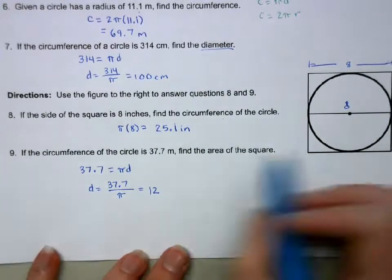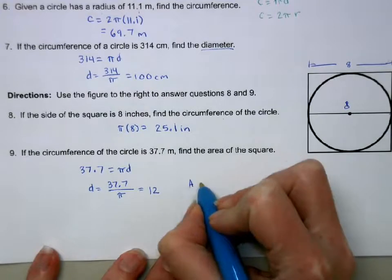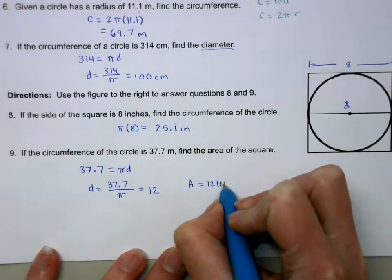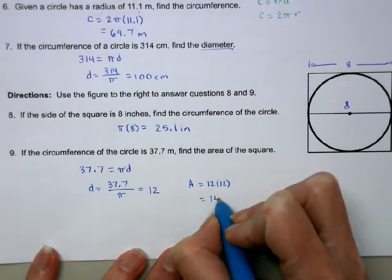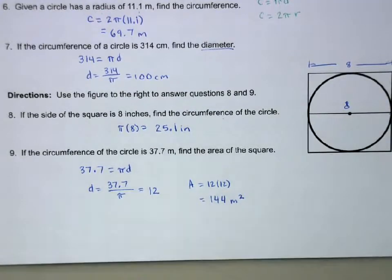That's the side. If the side of the square is 12, then to find the area, I'm going to multiply 12 times 12, which gives me 144 meters squared for the area of that square.